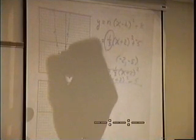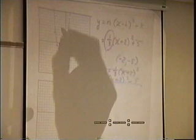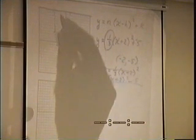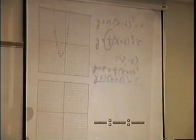Watch this. This is 1, 2, 3, 4, 5, 6, 7, 8, 9, 10, 11, 12, 13, 14, 15, 16, 17. 1/3 of 17 is about 6, approximately.